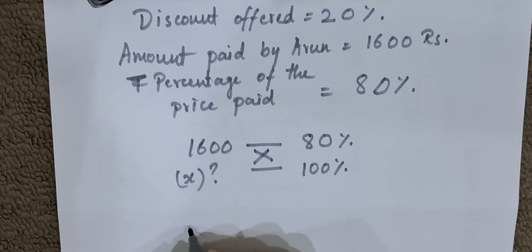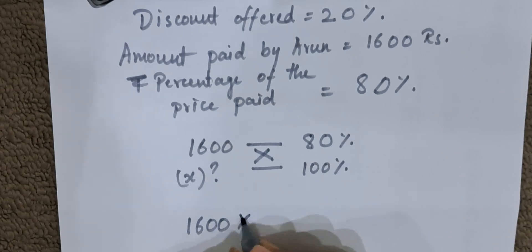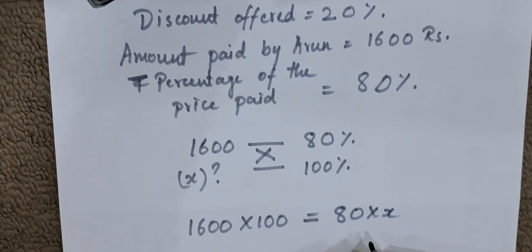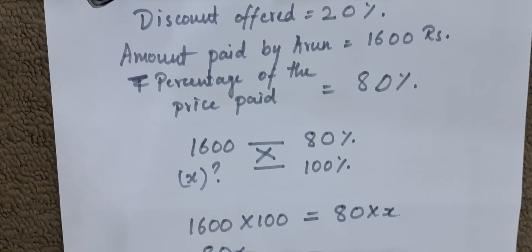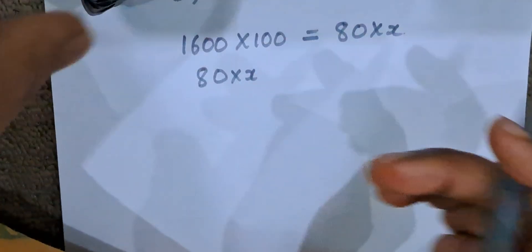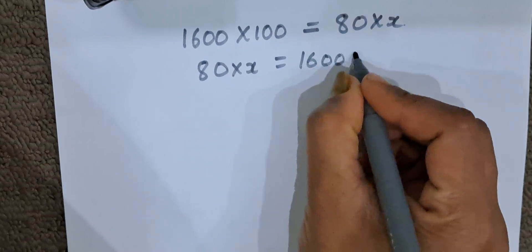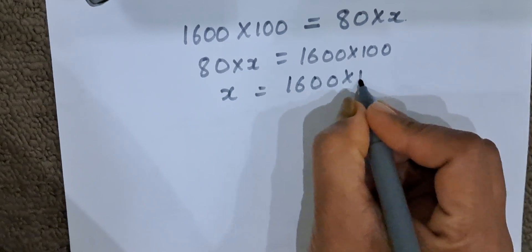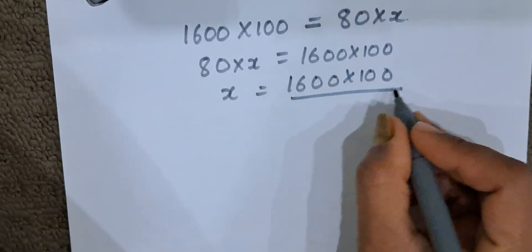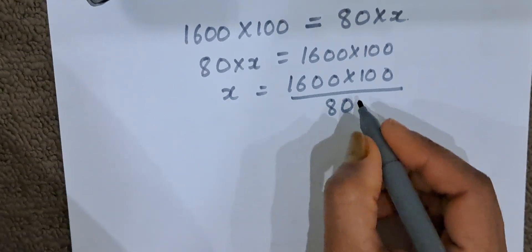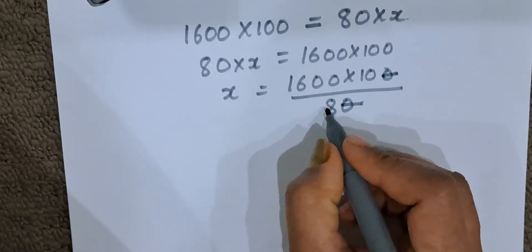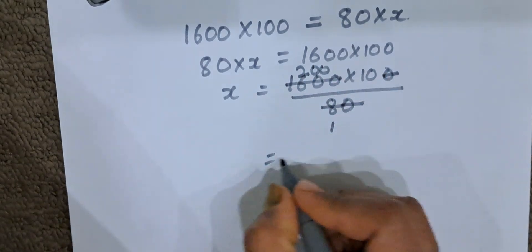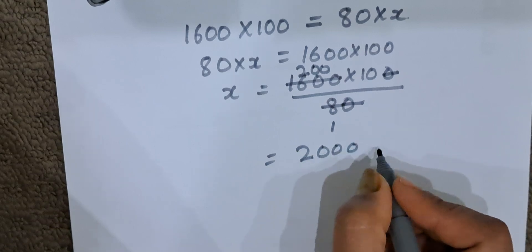1600 into 100 will be equal to 80 into X. So 80 times X is equal to 1600 times 100. X will be 1600 into 100 divided by 80. The zeros get cancelled — 8 twos are 16 — so it becomes 200 into 10. Therefore X is 2000 rupees.